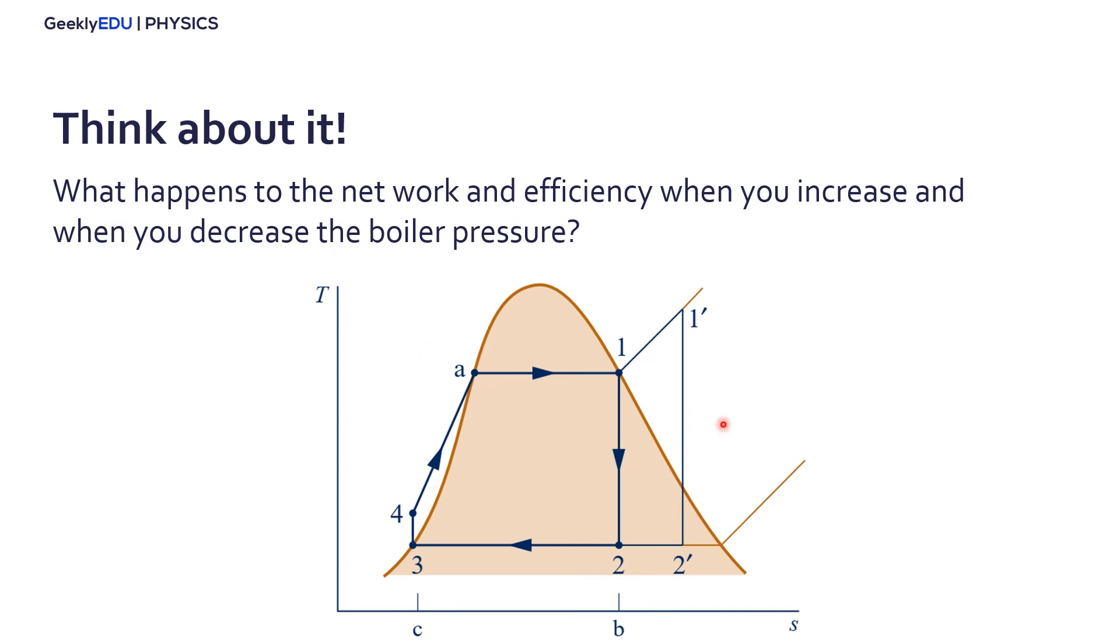Try to remember where is the boiler in this TS diagram here, and what happens when you increase, in other words, you take this orange line here of constant pressure and elevate it, or when you decrease it. So think about what happens to the network and efficiency, and write down your answers in the comment sections.